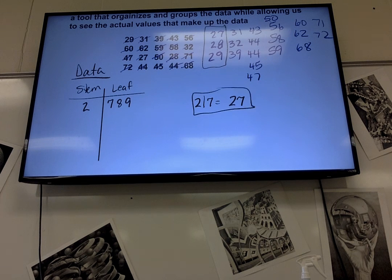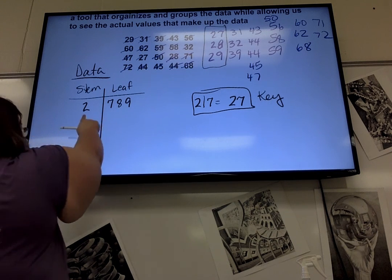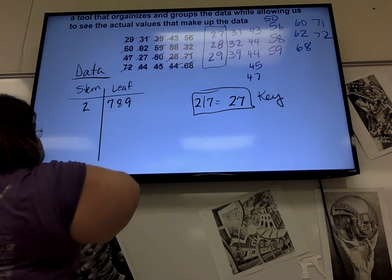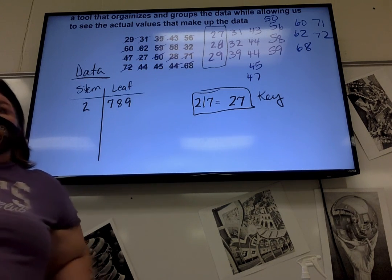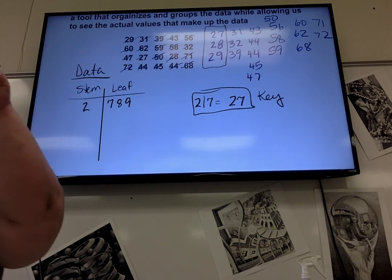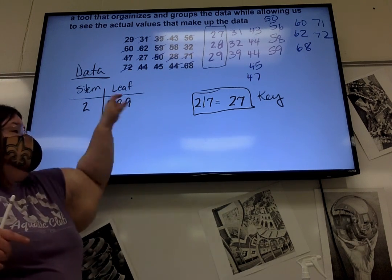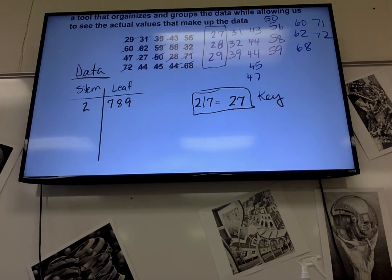Notice the seven, eight, and nine do not have commas in between them. I will count off for that. That has to look like this. Stem and then the leaves just written beside each other. I know that leaves are only made up of one number each. So I know that this represents three numbers, three different numbers: 27, 28, 29.